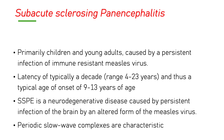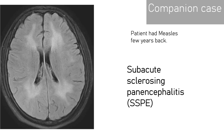EEG shows characteristic periodic slow wave complexes which are sometimes diagnostic. Another patient is similar, but in this patient there is a much more periventricular pattern — like an HIV pattern — with periventricular, bilateral symmetrical hyperintensity and demyelination pattern. This is also proved by CSF and EEG testing. So this is also one of the classical patterns of SSPE. Thank you very much for your kind attention.